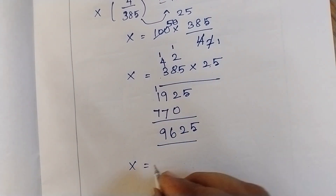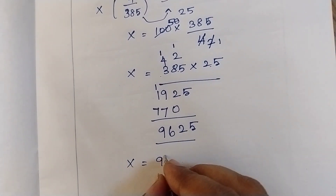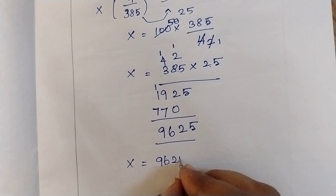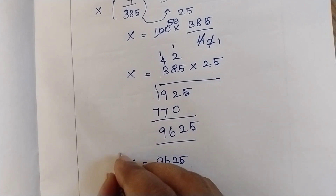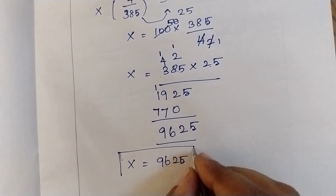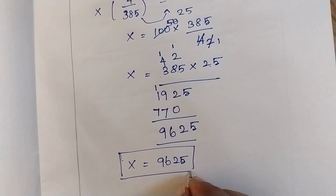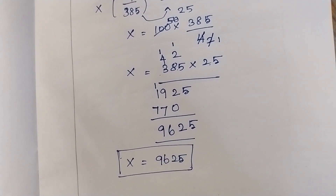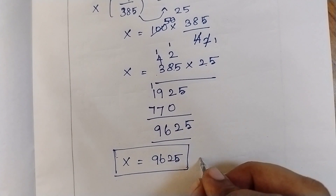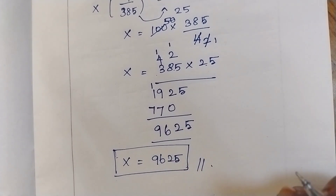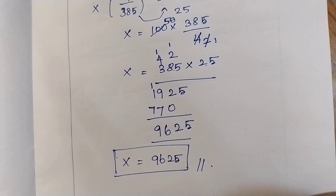Therefore the x value is equal to 9625. So the answer for this question is 9625. Practice twice and thrice, then we will get a perfect answer. Have a nice day. Bye-bye.